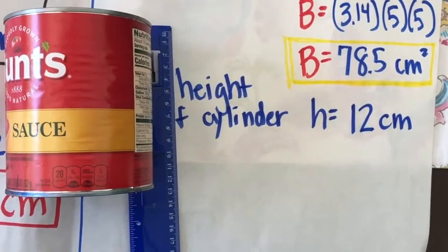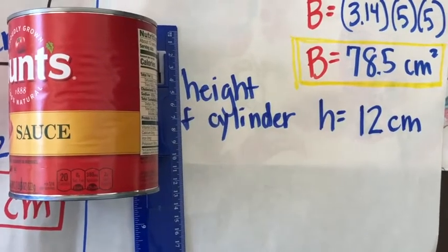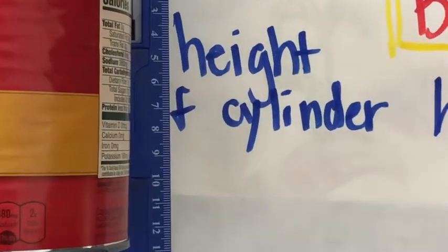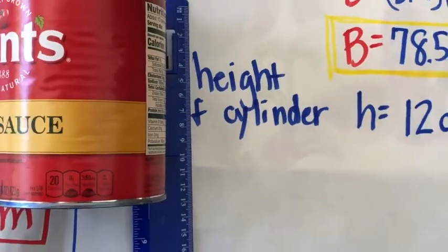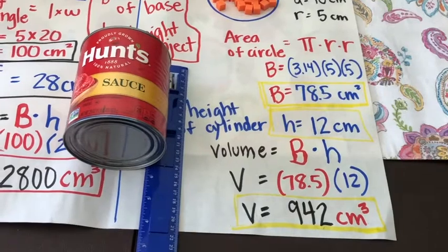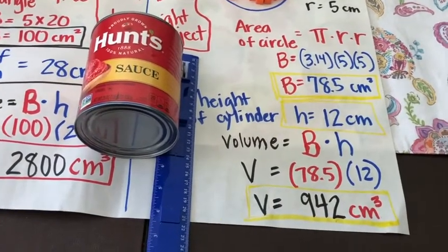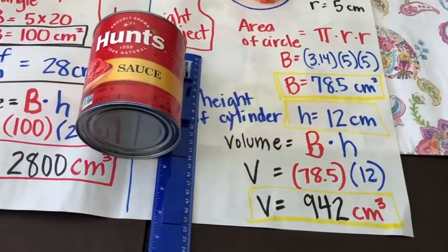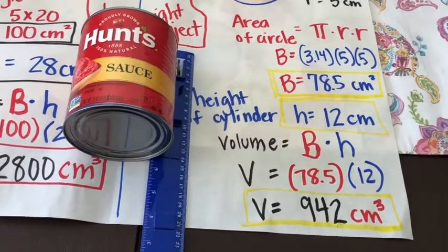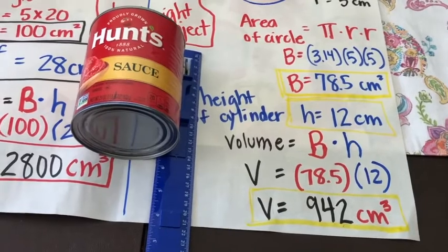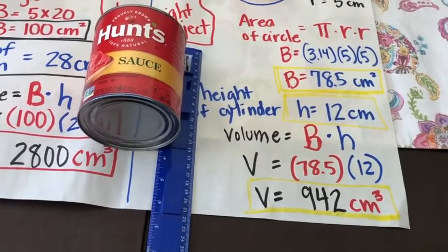Because the formula is area of the base times the height, I then must find the height of the cylinder. I measured that and found it was 12 centimeters. When I put my numbers into the calculator — area of the base 78.5 centimeters squared times the height 12 — I find that this can could be filled with 942 cubic centimeters.